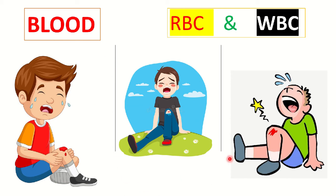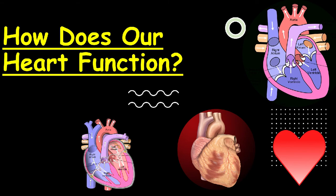Yes, you are right — it is pumped by an organ called the heart. You might have seen this picture of the heart, but have you ever seen this picture, this picture, or this picture? So in today's video, we will look at this basic question: how does our heart function? First of all, our heart is divided into four chambers: the right atrium or the right auricle, the right ventricle, the left ventricle, and the left atrium. So let's begin.